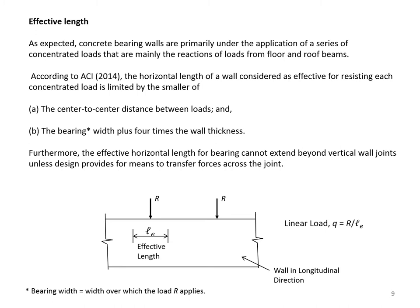Furthermore, the effective horizontal length for bearing cannot extend beyond vertical wall joints unless design provisions are made for means to transfer forces across the joints—for example, horizontal reinforcing bars placed at vertical joints. Over the effective length, the load is considered as a linear load Q, which equals R divided by LE.